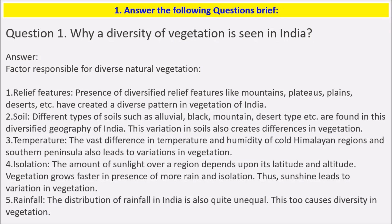Diversified relief features like mountains, plateaus, plains, deserts, etc. have created a diverse pattern in vegetation of India. Different types of soil such as alluvial, black, mountain, desert, etc. are found in the diversified geography of India. This variation in soils also creates differences in vegetation. Temperature — the vast difference in temperature and humidity of cold Himalayan regions and south peninsular India also leads to variation in vegetation.